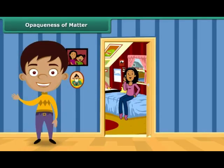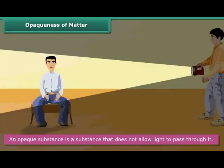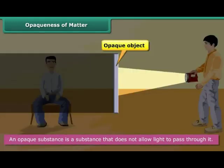Can you see what is happening in a closed room? No. It is because the walls and doors of the room are opaque. An opaque substance is a substance that does not allow light to pass through it. In other words, it is impenetrable by light. It does not absorb light; instead, it reflects light back. Hence, we cannot see things through an opaque substance.